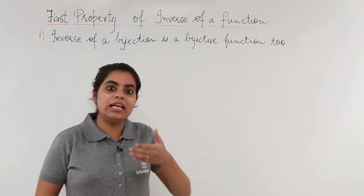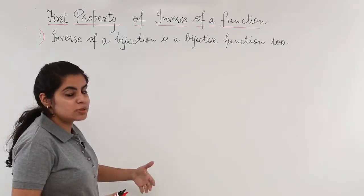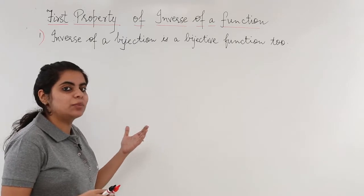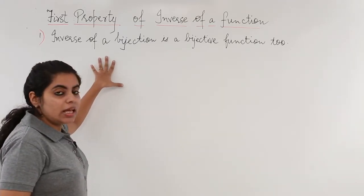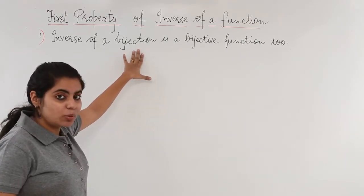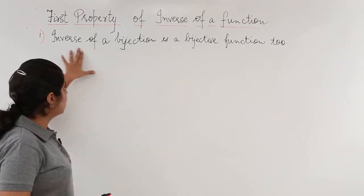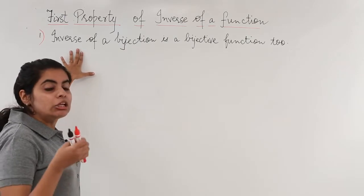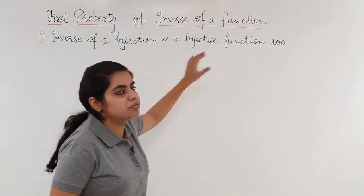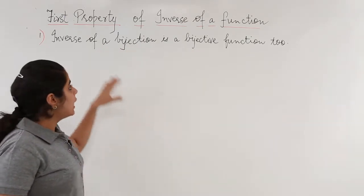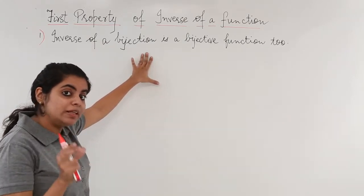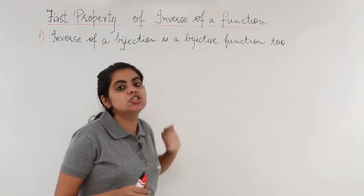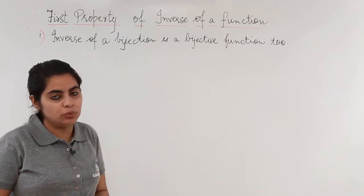Let's read and learn what is the first property, then understand it with the help of an example. The property says if you have a function which is a bijective one, you take the inverse and then you in turn get a bijective function. That means inverse of a bijection will give me again a bijection only, a bijective function only.